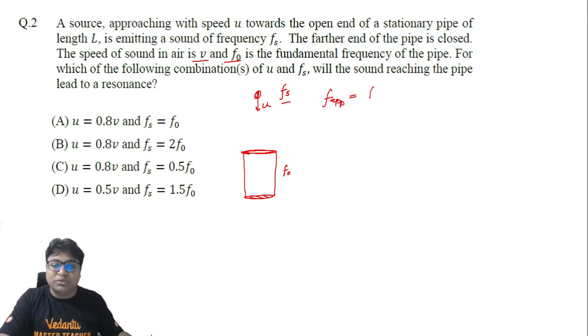To calculate it we use the Doppler formula, so I'm going to say fs into the speed of wave, so that is given to be v, so v upon (v minus u). So this is the frequency that will be detected at the open end of the pipe.